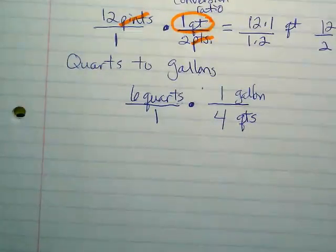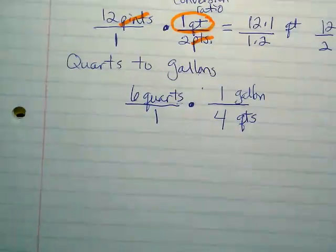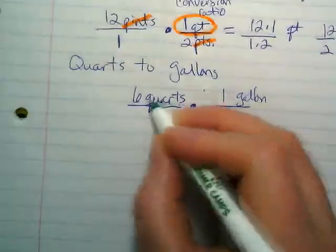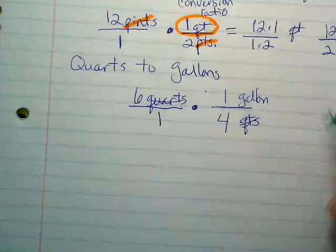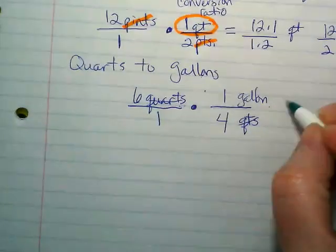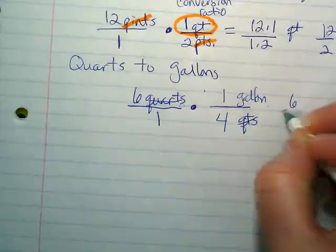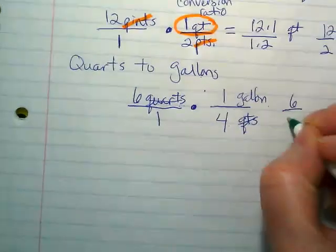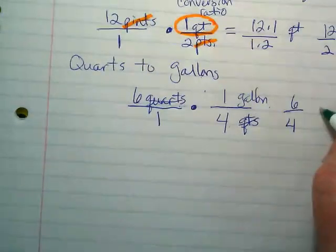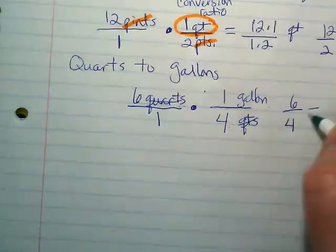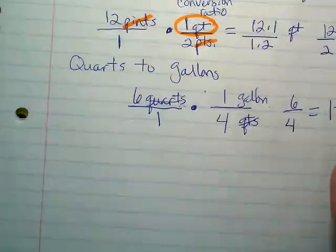As soon as I have quarts in there twice, one in the numerator and one in the denominator, I can delete them because I'm trying to convert away from them and change my measurement to gallons. Gone, gone. What's left? One gallon. And I'm going to just show six times one is six, one times four is four, and I get six over four gallons, which is equal to one and a half.